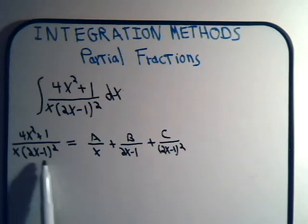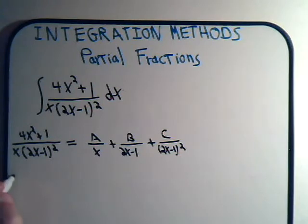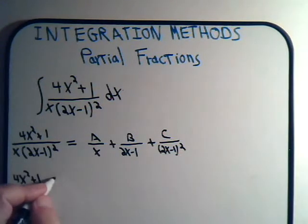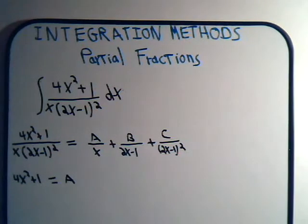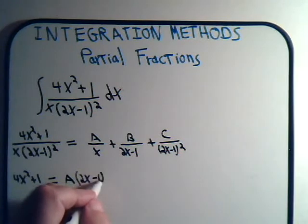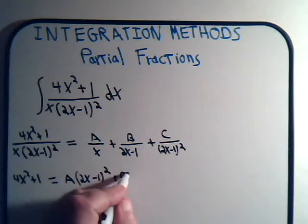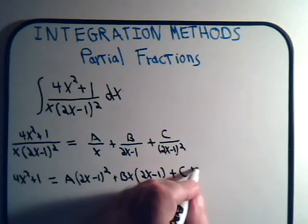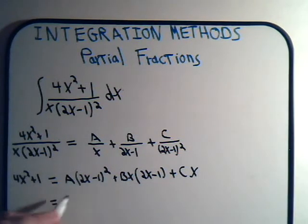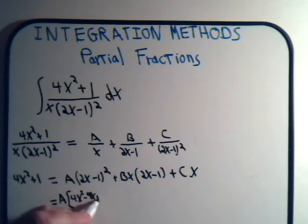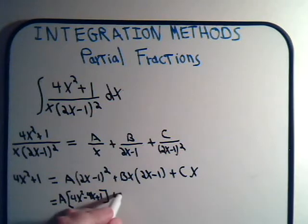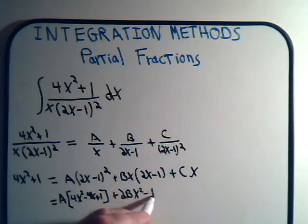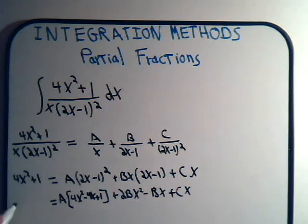Okay, let's multiply both sides of the equation by this. We'll have 4x squared plus 1 will equal A times 2x minus 1 squared plus B times x times 2x minus 1 plus C times x. So, multiply this out,